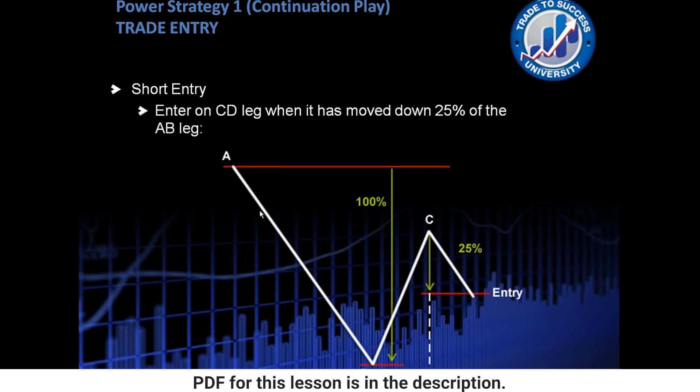So we've got the A move down to the B, B up to C, which is at least 50%, but not more than 90%. And then when price moves down from point C, 25% of the A to B move, which is represented by this green line here, then we want to enter.